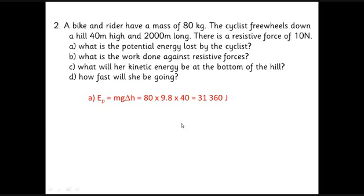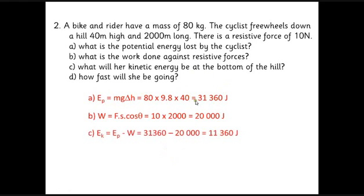But that hasn't all turned into kinetic energy. A lot of it's turned into the work against the resistive forces. How much is that? F cos theta: the resistive force is in the same direction, so the cos theta doesn't matter to us here. Force times distance is 10 times 2000, which is 20,000 joules. By the conservation of energy, if there's 31,000 joules we've lost and 20,000 has gone into work against friction, that leaves 11,360 joules as kinetic energy.